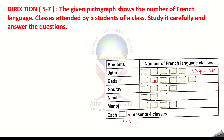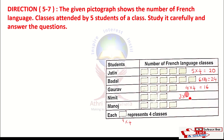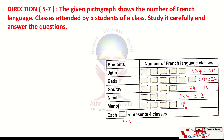Kaurav has 4 pictures, so 4 into 4 equals 16 classes. Nimith has 3 pictures, so 3 into 4 equals 12 classes. Manoj has 4 pictures, so 4 into 4 equals 16 classes.